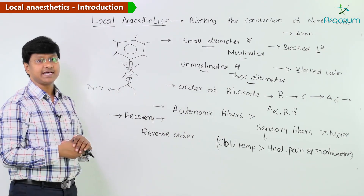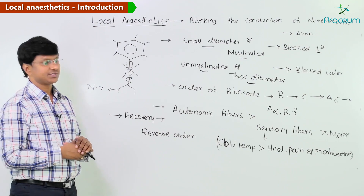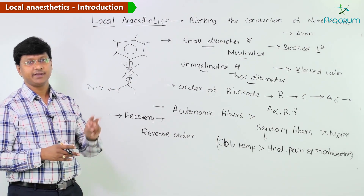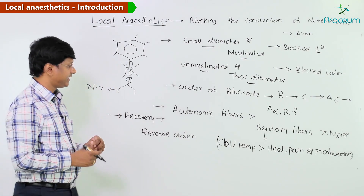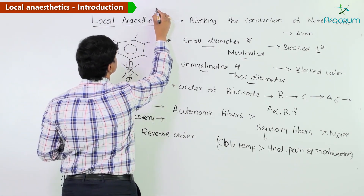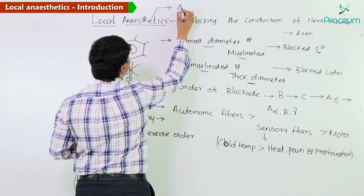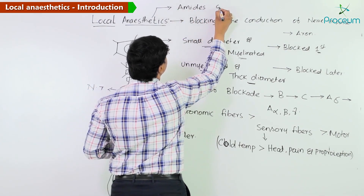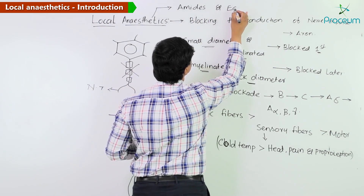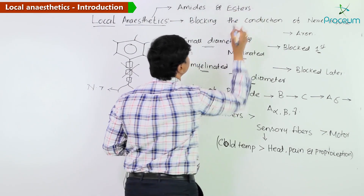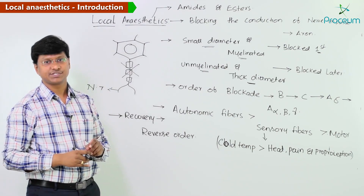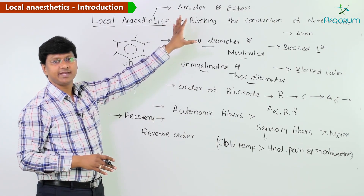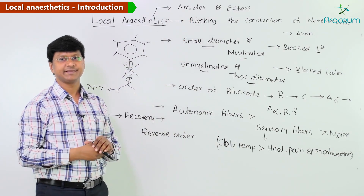Now we will see the classification of local anesthetics. They are classified mainly into two types: amides and esters.